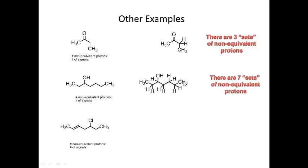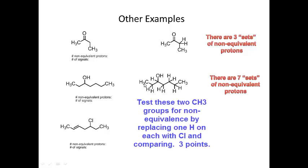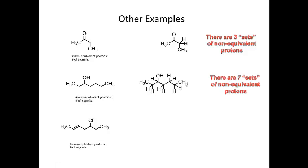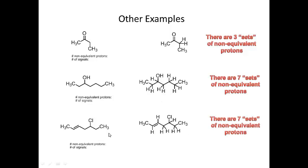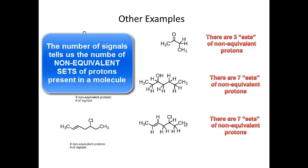Here we have an alcohol. Drawing the hydrogens out, this CH3 and that CH3 are not the same because the location of the alcohol makes them different. You have one, two, three, four, five, six, seven sets of non-equivalent protons, so you will see seven signals in the NMR. With good enough resolution, you may also see the OH proton, giving a potential for eight signals. Similarly, this alkene also has seven sets of non-equivalent protons and will show seven signals.